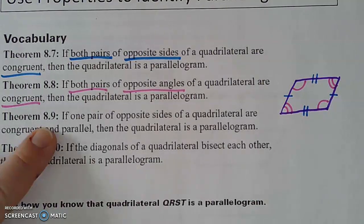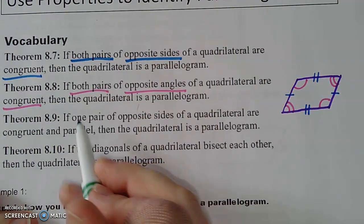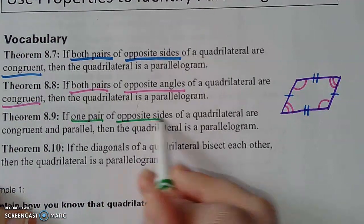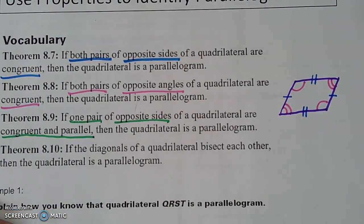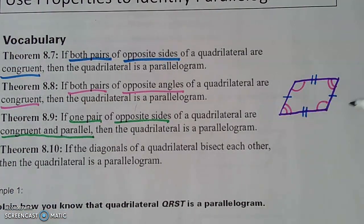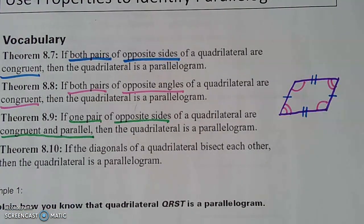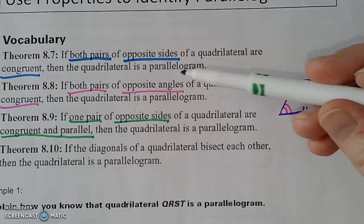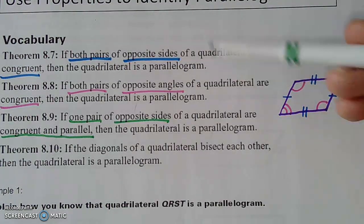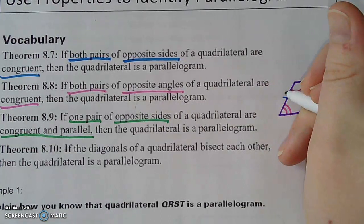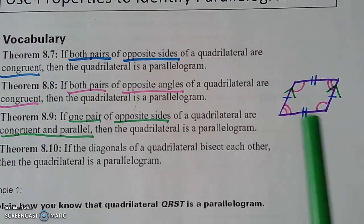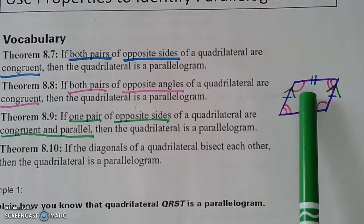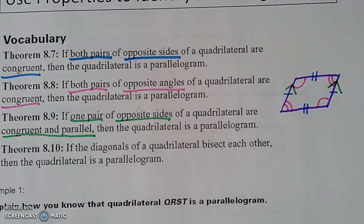Next, 8.9, if one pair of opposite sides of a quadrilateral are congruent and parallel. So I already have the sides labeled as congruent. The added thing is just one pair not only needs to be congruent, but also parallel. So I'm going to add my little arrows showing that they are parallel. As long as you have one pair that is both congruent and parallel, then it is a parallelogram.